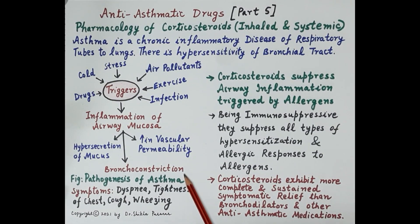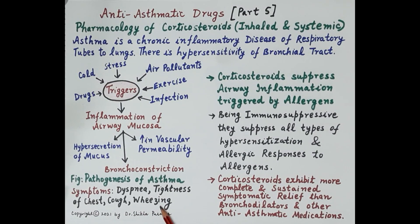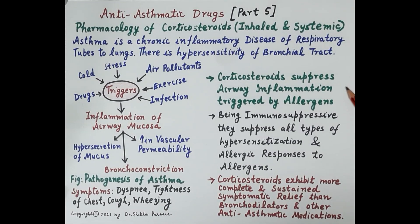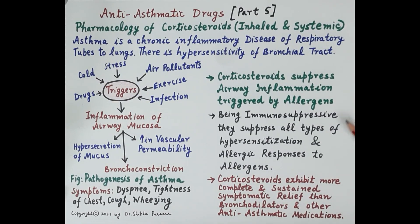This inflammation results in hyper-secretion of mucus, increased vascular permeability, and the cardinal feature of asthma — bronchoconstriction. The symptoms of asthma include dyspnea (difficulty in breathing), tightness of chest due to smooth muscle contraction, cough, and wheezing, which is a whistling sound heard during exhalation.